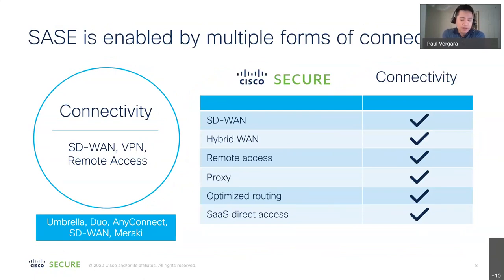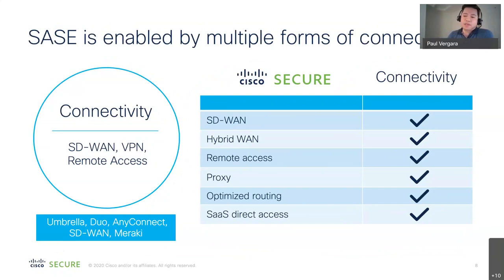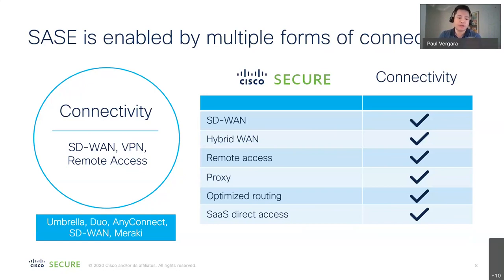At Cisco, connecting people and devices is our wheelhouse, and we've developed robust offers around each connectivity element. In today's session for SD-WAN, we'll talk more about Viptela, but keep in mind we also have Meraki. For remote access, AnyConnect is our widely adopted tool — and it's much more than just a remote access tool. We also have proxy-based solutions for both outbound web access protection and inbound — exposing web applications to users — and we do these with solutions like Umbrella and Duo.